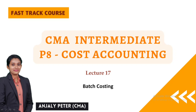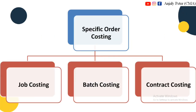Hello, welcome to CMA Intermediate Cost Accounting in the fast track course. In this class, the topic is Batch Costing. We will study costing types. We have two types of costing: Specific Order Costing and Process Costing. Under Specific Order Costing, we have Job Costing and Batch Costing.